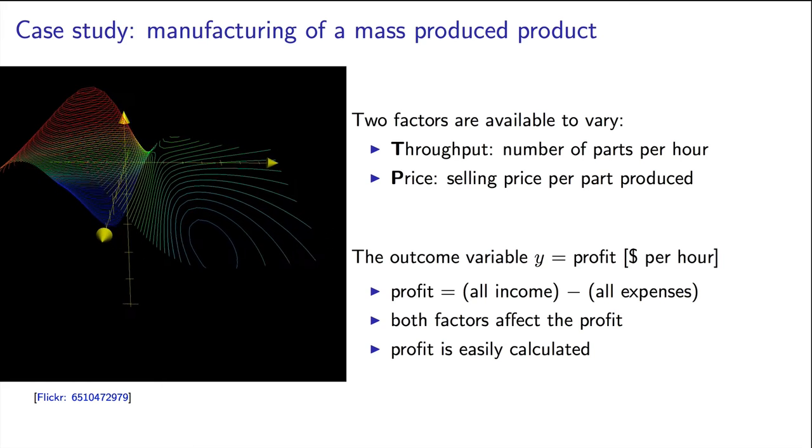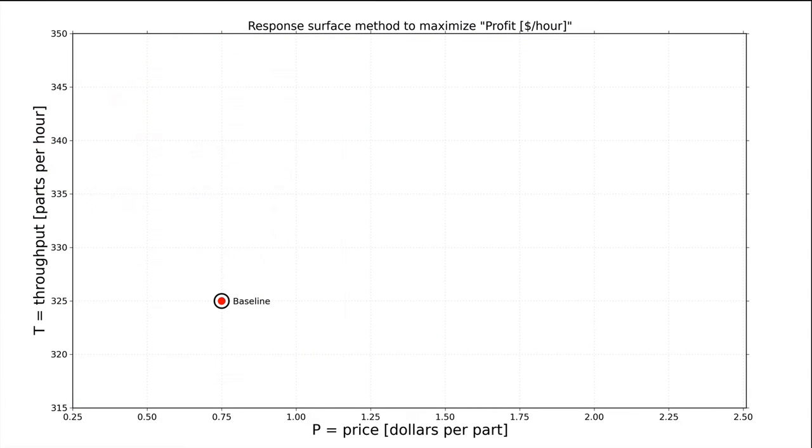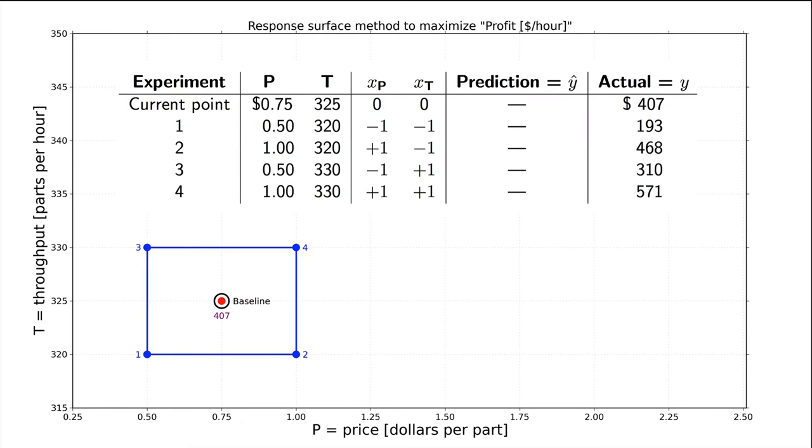Another bonus is that the profit value is relatively easy to calculate if you have all the costs and incomes available. And it is relatively precise. There's a low amount of noise. So let's get going. Your company has been making parts for some time, at a production throughput of 325 per hour, and selling them for 75 cents per part. At these conditions, they make $407 per hour. Now let's run a full factorial around this baseline. We need to choose high levels and low levels for the factors. I'm going to pick these: 320 and 330 parts per hour for factor T, and 50 cents and $1 for the price P. How did I choose these? What are suitable low and high level values?